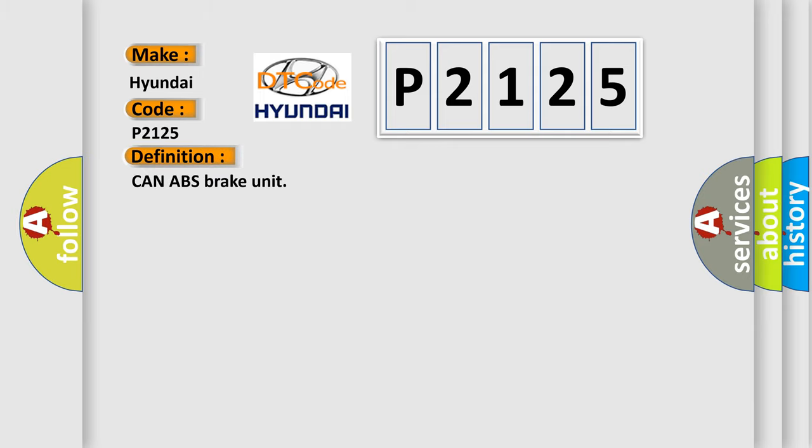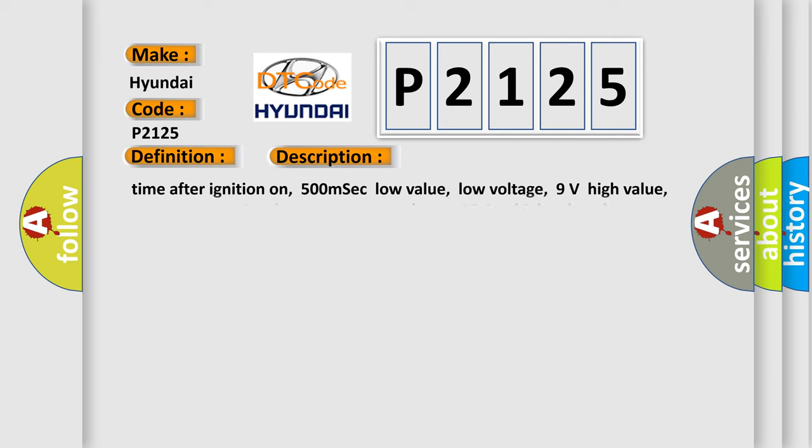The basic definition is CAN ABS brake unit. And now this is a short description of this DTC code: Time after ignition on 500 milliseconds. Low value low voltage 9 volts, high value low voltage 95 volts. Low value high voltage 160 volts, high value high voltage 165.